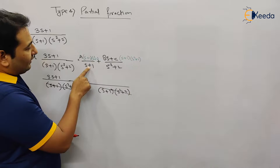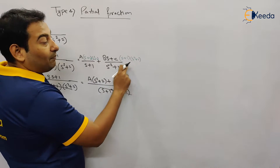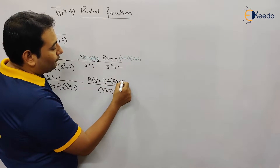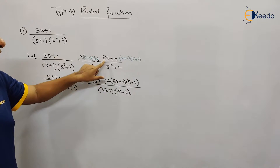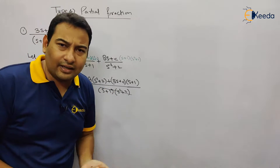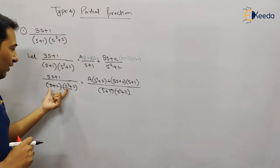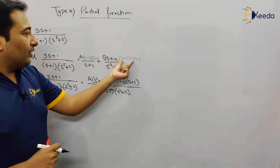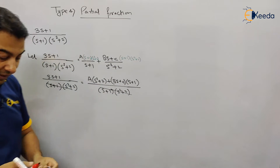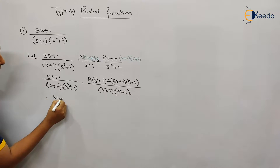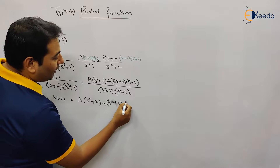This s plus 1 will be cancelled and with A we will be left with s squared plus 2. Here s squared plus 2 will be cancelled and we will be left with (Bs+C)(s+1). This is similar to cross multiply. When the LCM becomes complicated, this technique helps find the result faster. Therefore we are left with: 3s plus 1 equals A(s²+2) plus (Bs+C)(s+1).